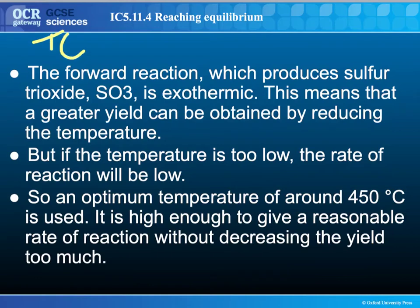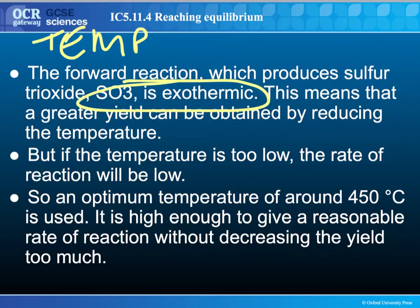Looking at temperature first — we need to know which direction is exothermic and which is endothermic. It turns out the production of sulfur trioxide is an exothermic process. That means doing it at a lower temperature gives a greater yield; however, you get a very slow reaction rate. So you have to find a balance — we call this the optimum temperature — where you achieve a high enough yield at a quick enough rate. In this reaction it's chosen at about 450 degrees.